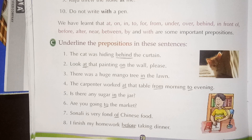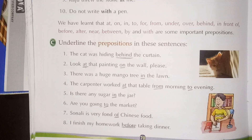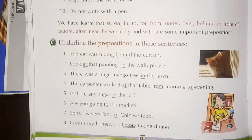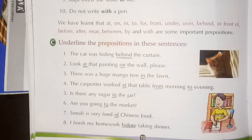There was a huge mango tree in the lawn — lawn ke andar. The carpenter worked at that table from morning to evening — worked at that table, means table pe hi kaam karta raha; from means subha se, sham tak. Is there any sugar in the jar? Are you going to the market — market ko ja raha ho. Sonali is very fond of Chinese food — fond ke saath hamesha of lagate hain, just like made of. I have finished my homework before taking dinner.